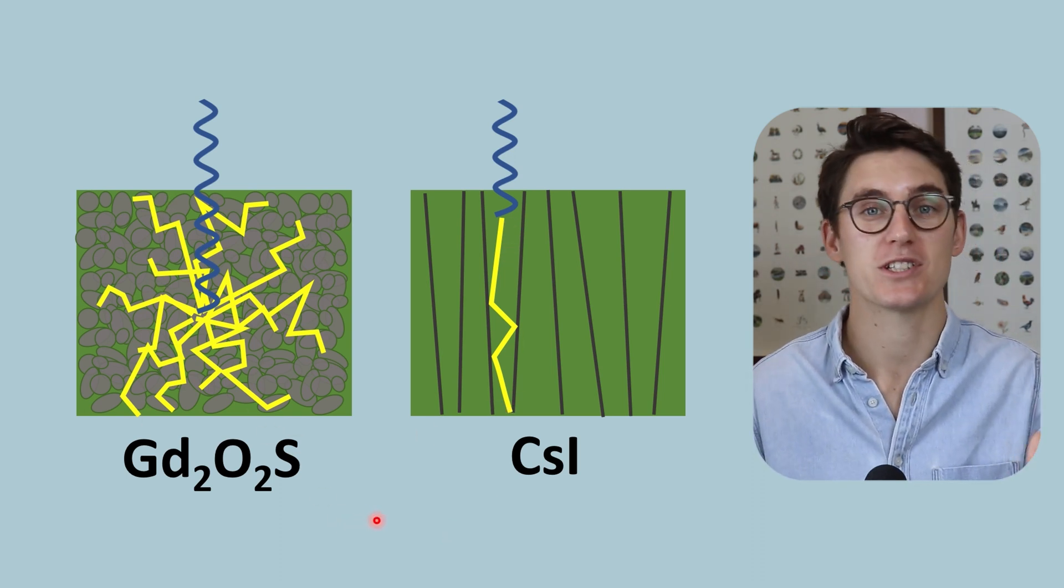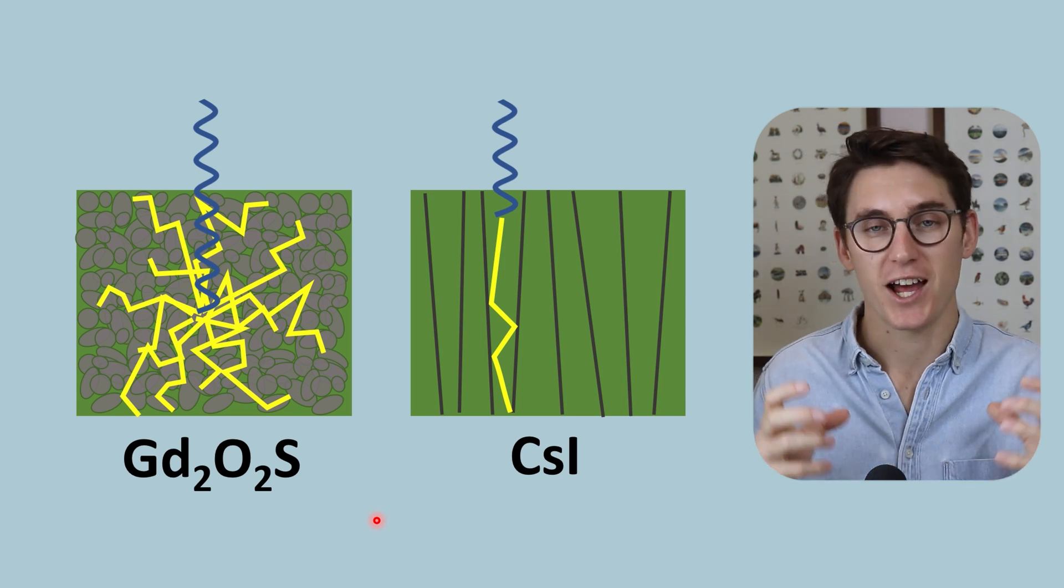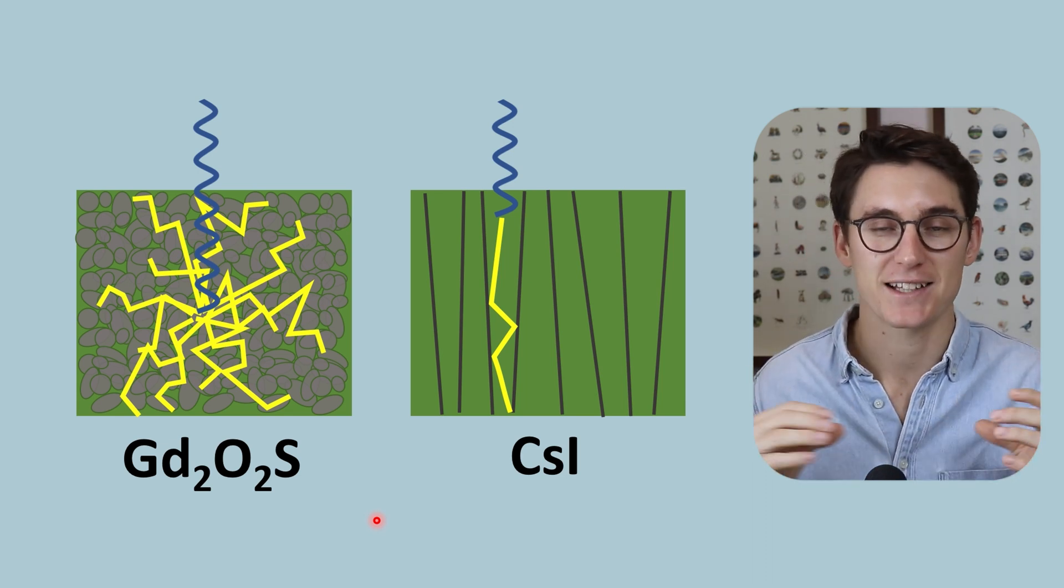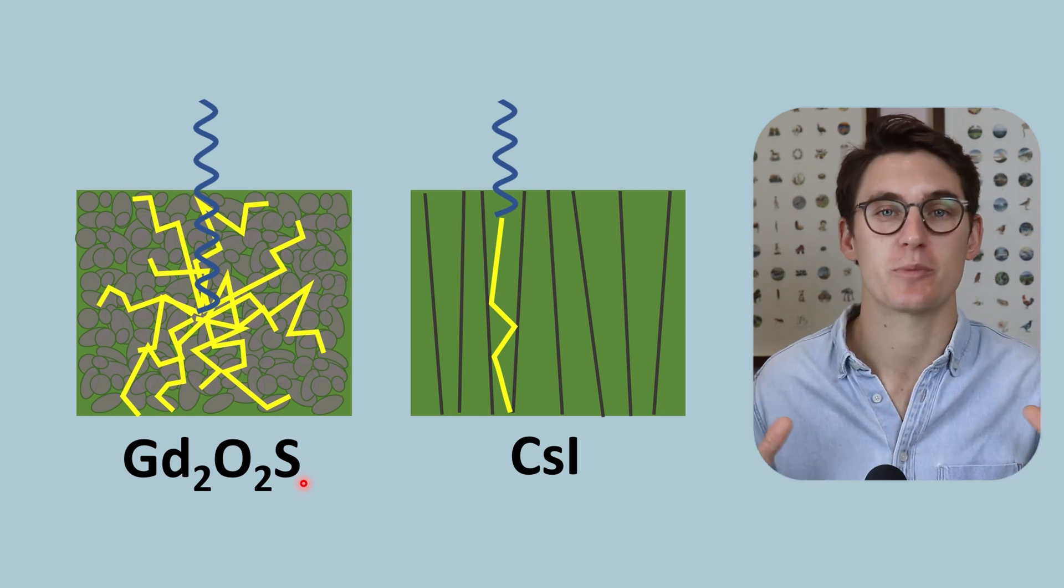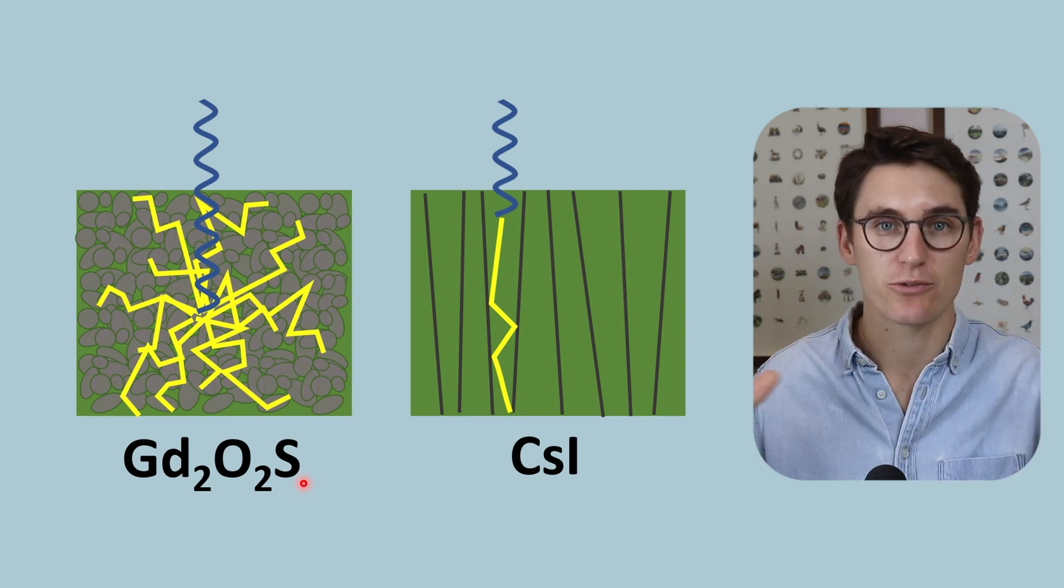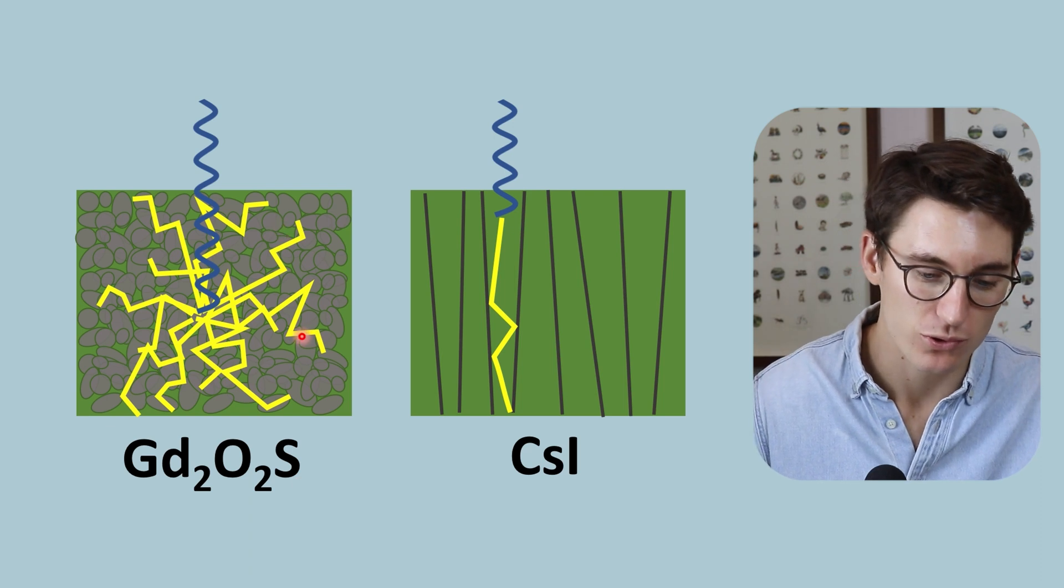Our gadolinium oxysulfide is firstly much cheaper and it creates a lot stronger light signal at our detector level. But that comes at the cost of a loss of spatial resolution as those light photons spread out traveling through this phosphor layer.